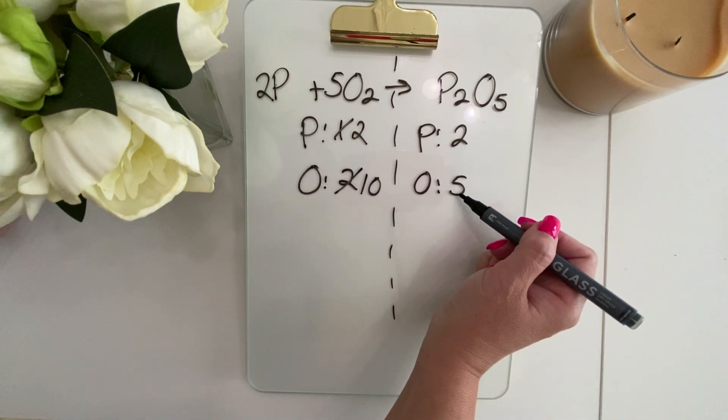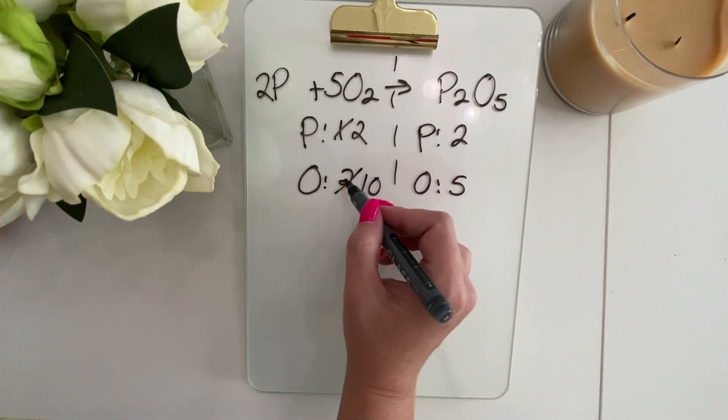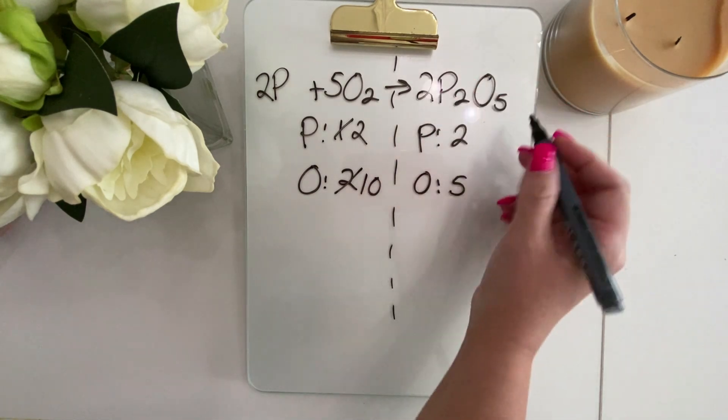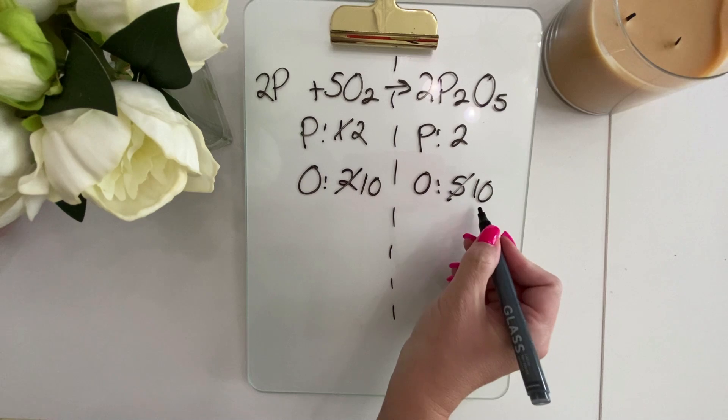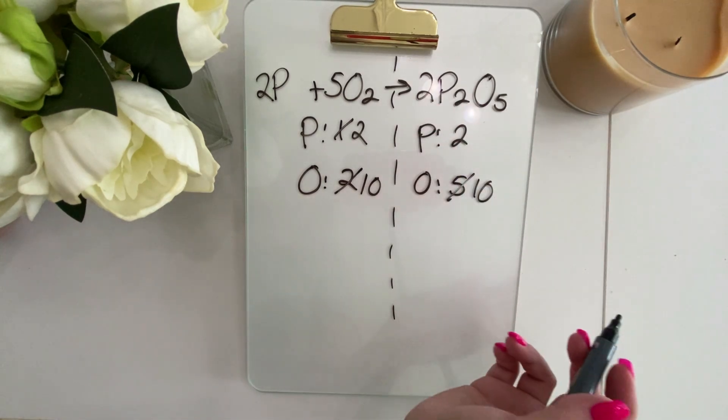And then over on this side, we need it to be 10 as well. So we're going to use that two in the front and make it 10 because that two times the five gives us 10.